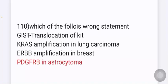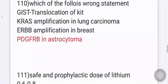Which of the following is the wrong statement? Options include: KID translocation in certain cancers, KRAS amplification seen in lung carcinoma, ERBB2 amplification in breast cancer, and PDGFRB in astrocytoma. The answer — the wrong statement — is PDGFRB in astrocytoma.